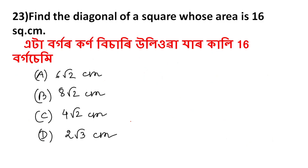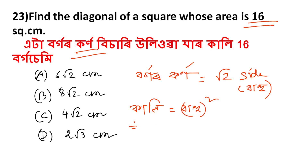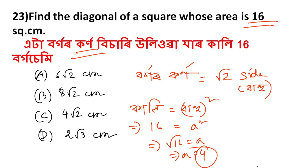Next question: find the diagonal of a square whose area is 16. The diagonal formula for a square is: diagonal = √2 × side. Since area = side² = 16, the side = 4. Therefore diagonal = √2 × 4 = 4√2. So side a equals 4 and the diagonal is 4√2.